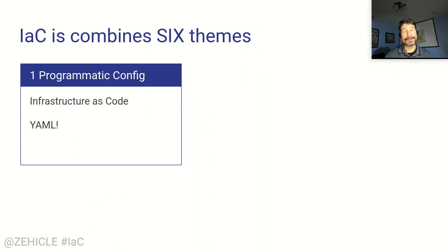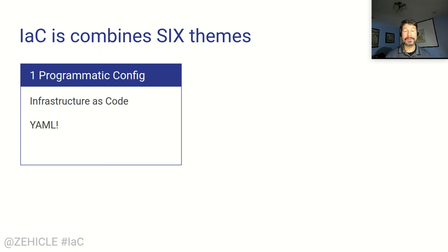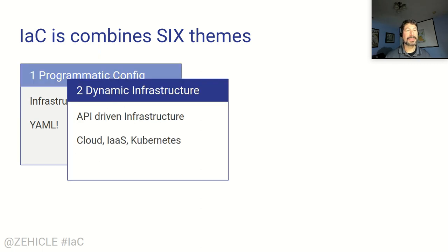Let's break infrastructure as code down into six component parts that'll help us break apart this bigger idea of beautiful robotic automation of our data centers into the tangible things we can deliver. The first is YAML — programmable config — so I can describe what I want in a file that's human-readable and machine-readable, and then use that to describe my data center. That's great, but it's not very complete. It just tells you what's there — like an Ansible inventory file, it's out of date the moment you write it. To make that work, you need to be able to take that code and use some dynamic infrastructure: a cloud infrastructure, infrastructure as a service, something like Kubernetes.